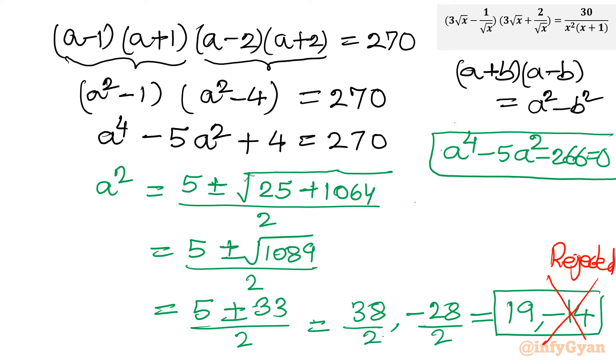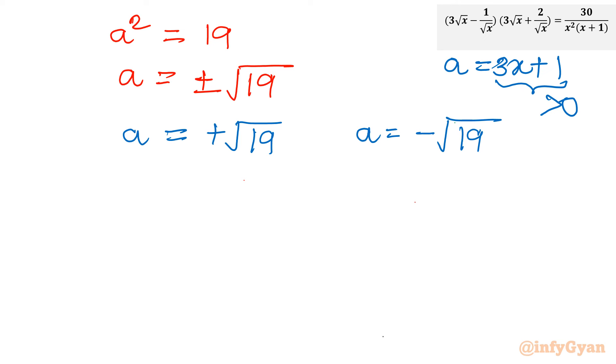So a² equals 19 only. Now let us find a. a² = 19, so a equals plus or minus √19. Again, one logic: a must be positive. So I will write a = +√19, and a = -√19 is rejected. a is positive always because our substitution was a = 3x+1. So this is the accepted solution.